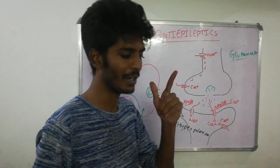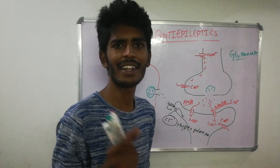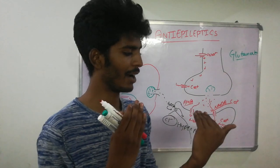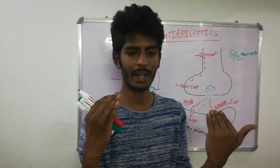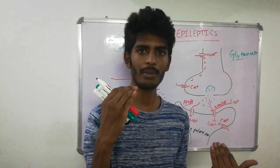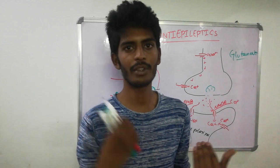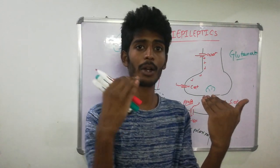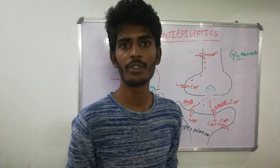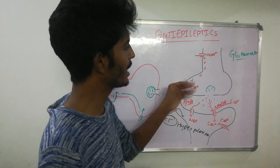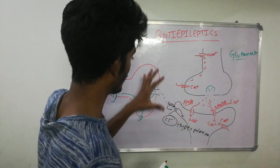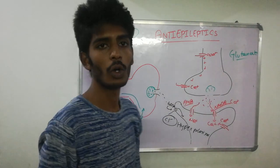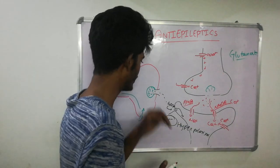In epilepsy, there is an imbalance: either GABA activity decreases, or glutamate activity increases, or both — leading to seizure. We can treat epilepsy by stimulating the GABA pathway or by inhibiting the glutamate pathway.